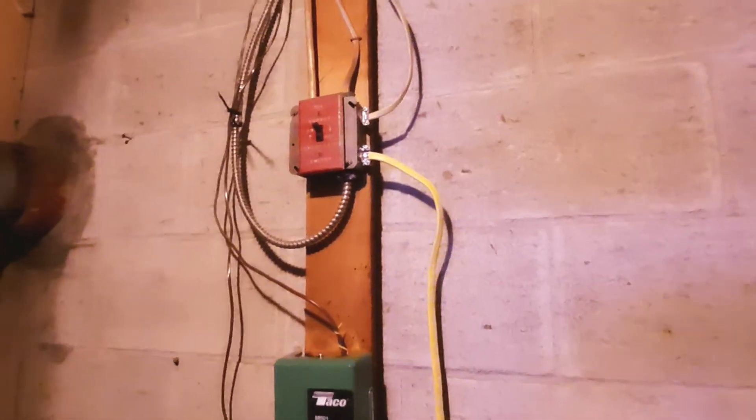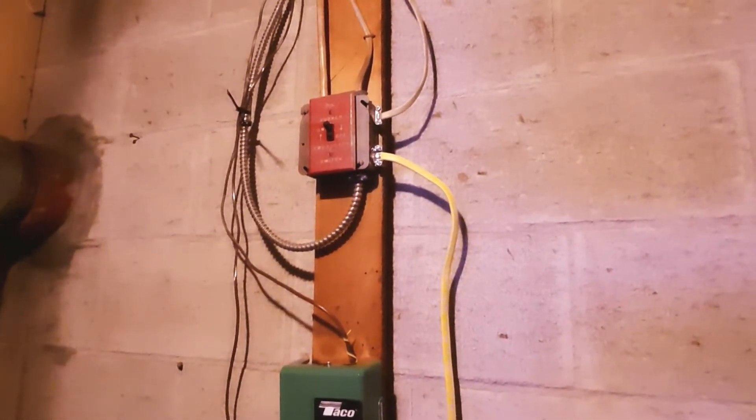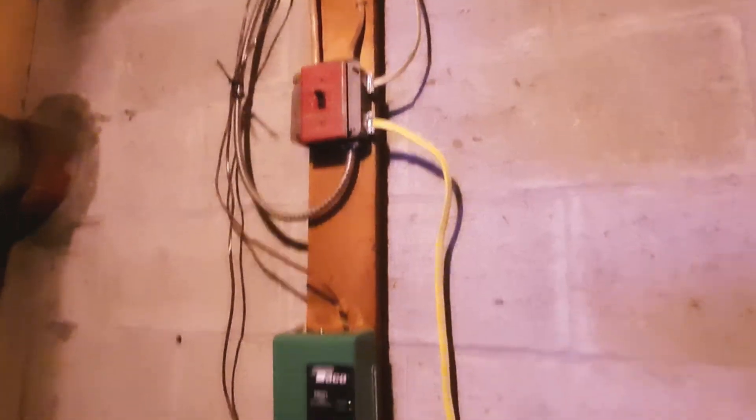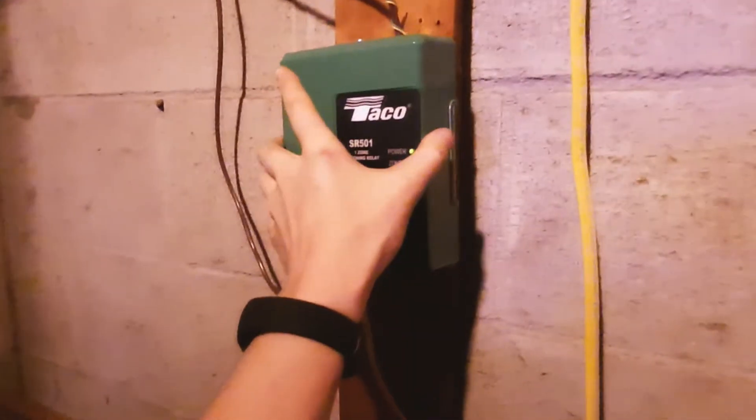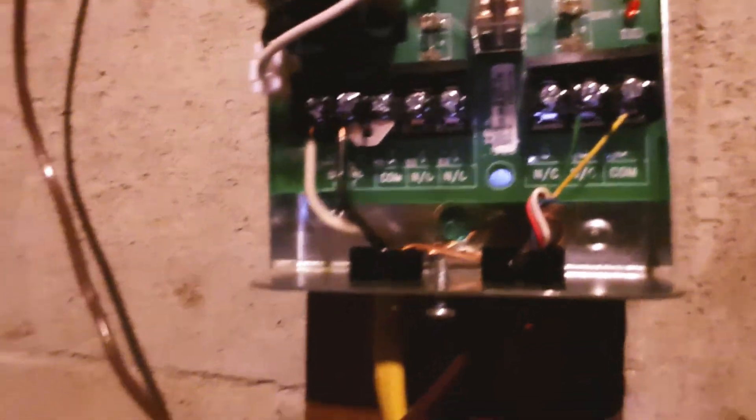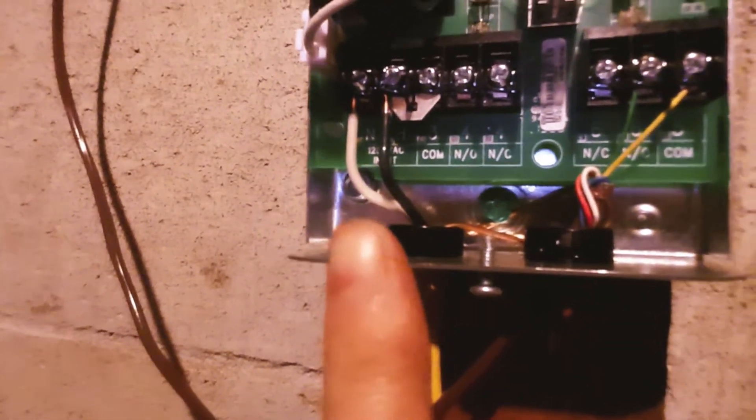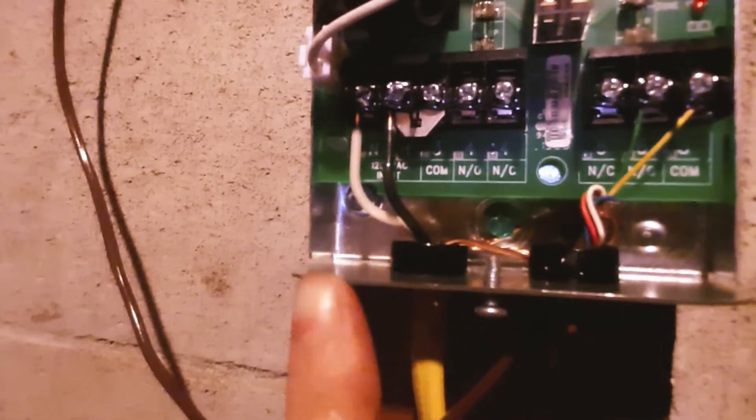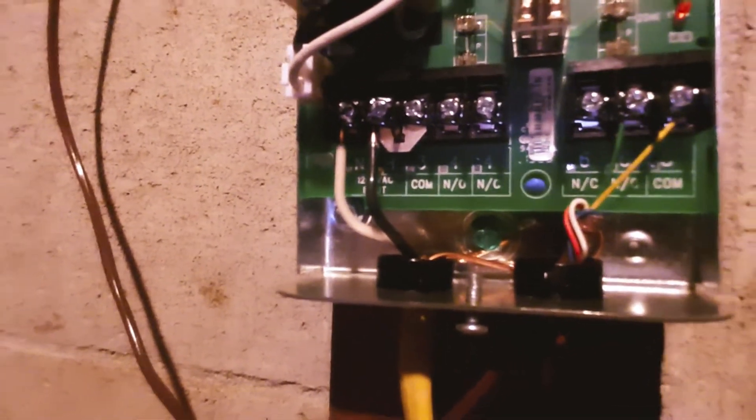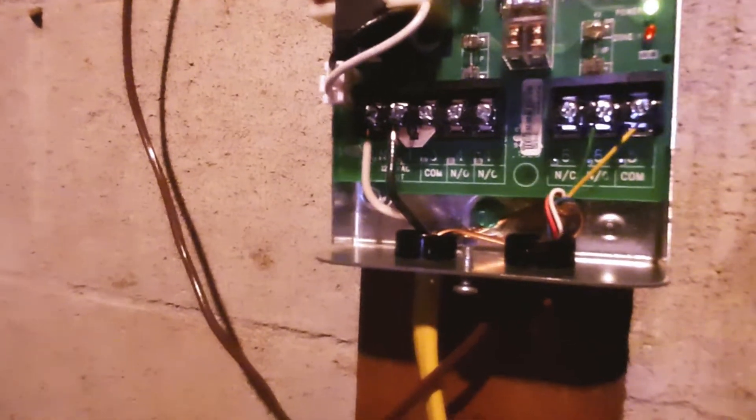And you can see here, I just tapped into the oil burner emergency switch because you're going to need 120 volts at the bottom of this switching relay, which you can see you've got neutral and hot for the 120 VAC input. And this is all in the instructions on the Taco switch.